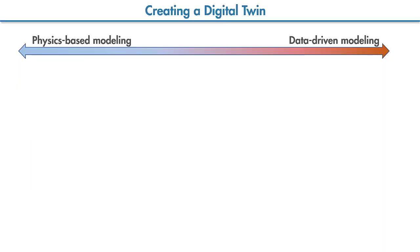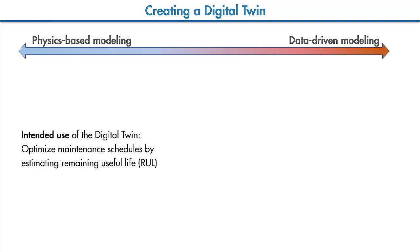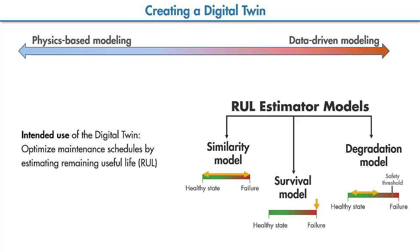Now let's discuss how you can create a digital twin. The modeling method we need to use really depends on our intended use of the digital twin. For example, if we want to predict the remaining useful life of the pump for optimizing maintenance schedules, then we can use a data-driven model such as the ones discussed in the previous videos. Our knowledge of the type of data from the pump will determine which model we'll be using.